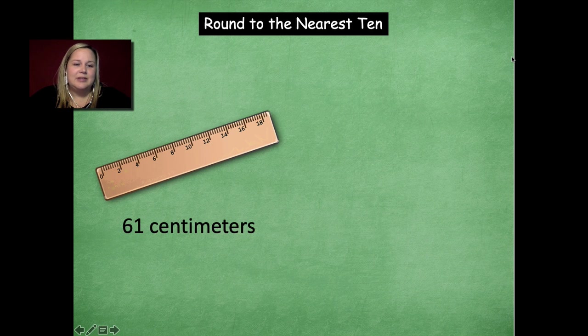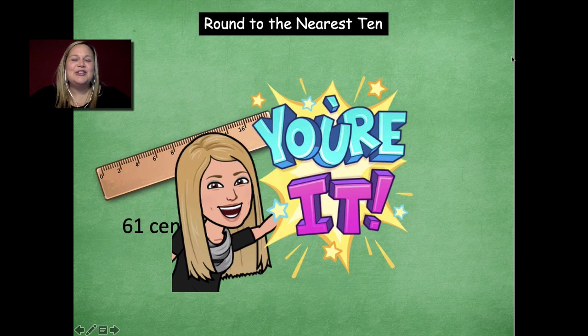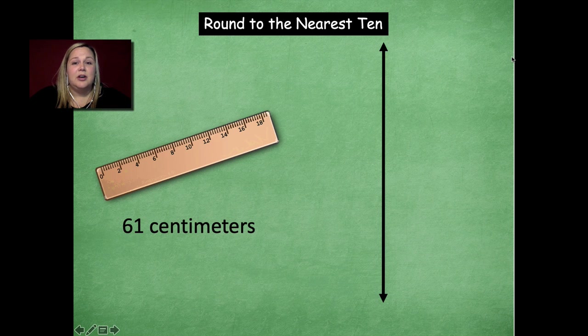All right. So here's our next one. Here's a centimeter ruler. And there are 61 centimeters that we measured using a ruler. But wait, tag, you're it. It's your turn to practice using the vertical number line to be able to estimate 61 centimeters to the nearest 10. So remember, you're going to go through, draw your vertical number line, label your endpoints, label your midpoint, and then find out is 61 centimeters. What is it rounded to the nearest 10? So go ahead and pause the video, draw that out on your whiteboard, and then click play when you're ready to go over it together.